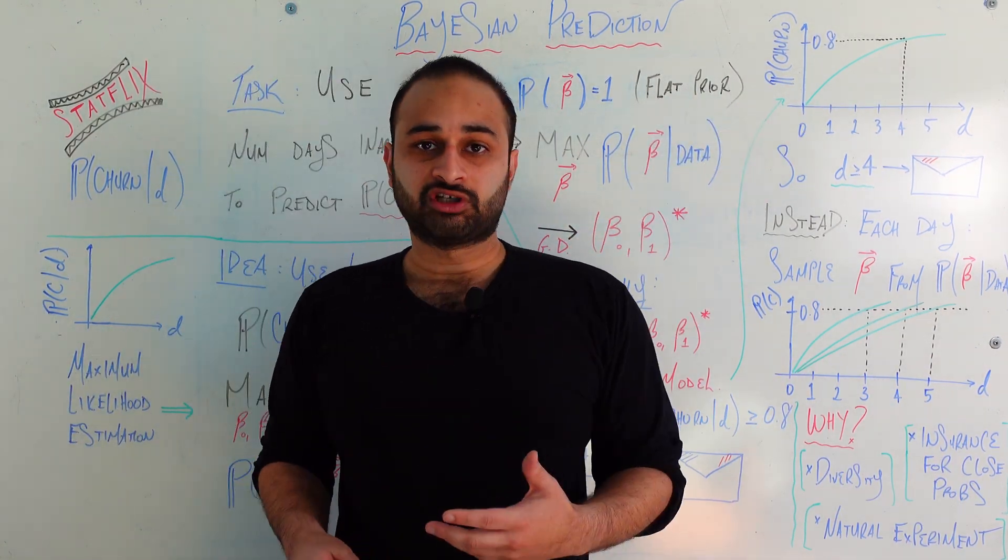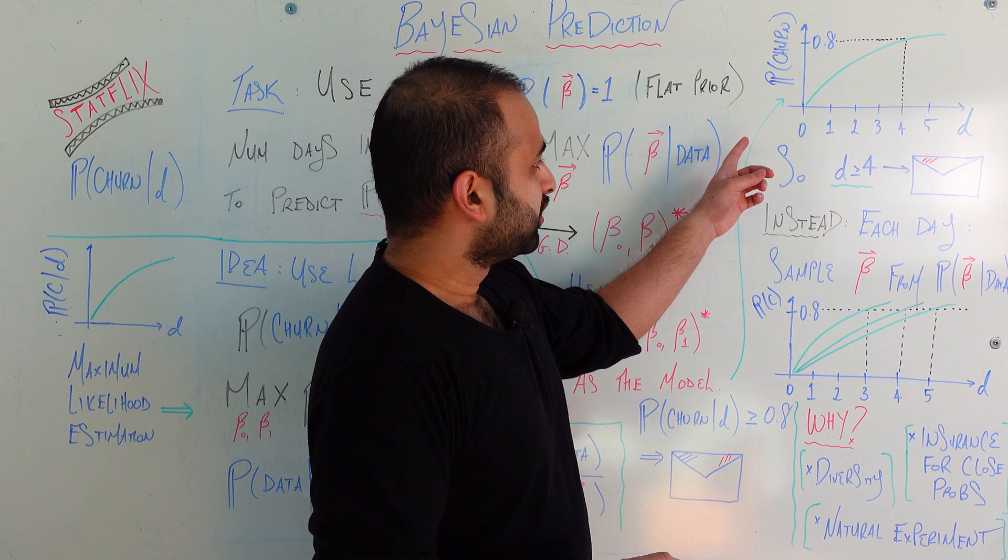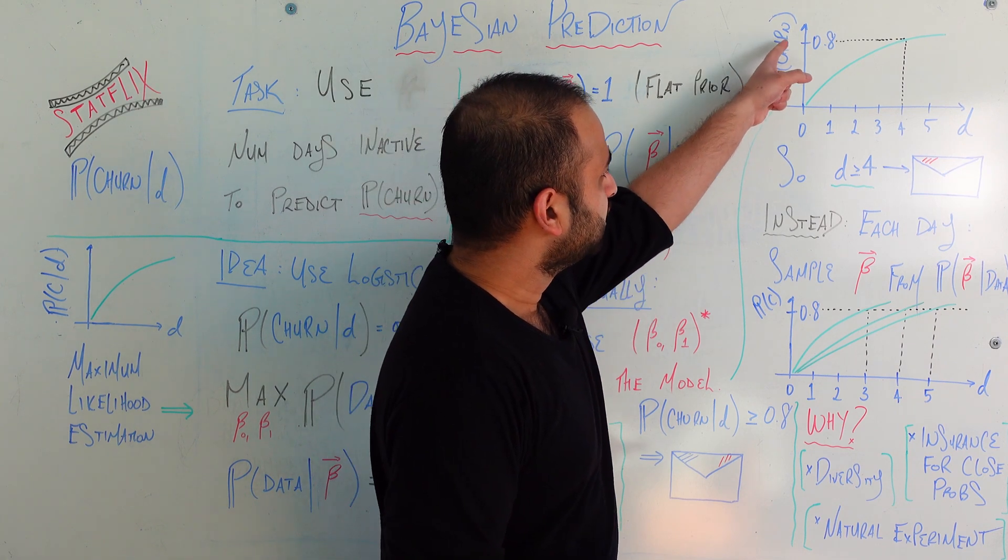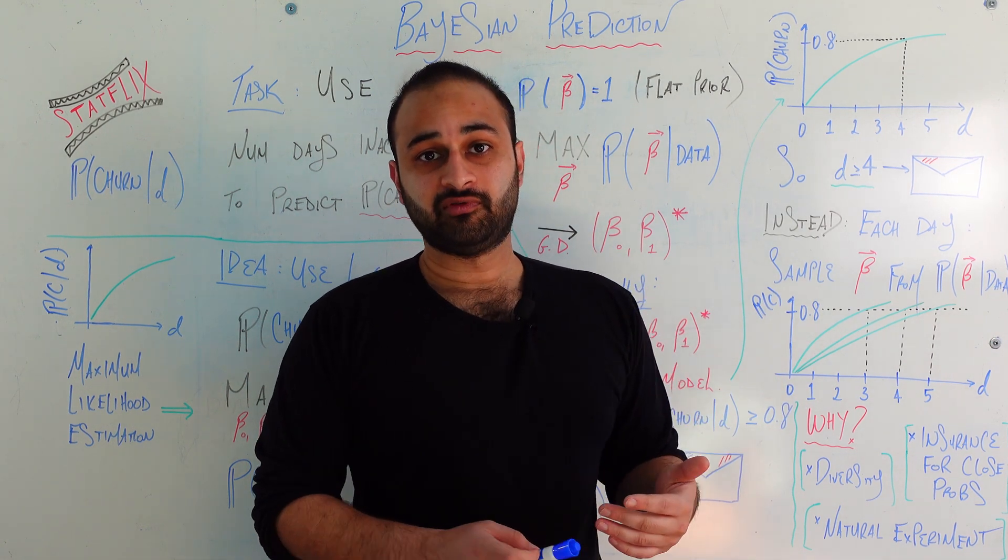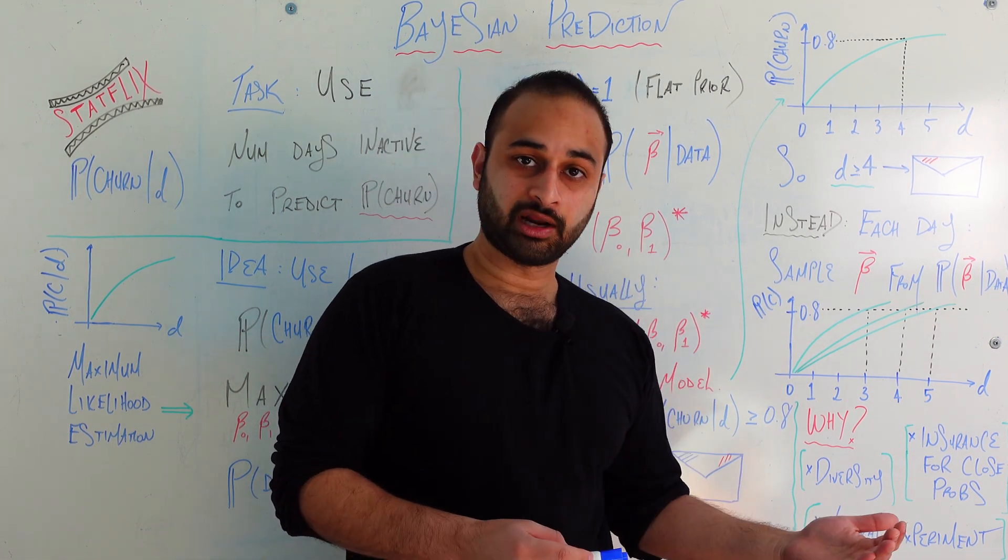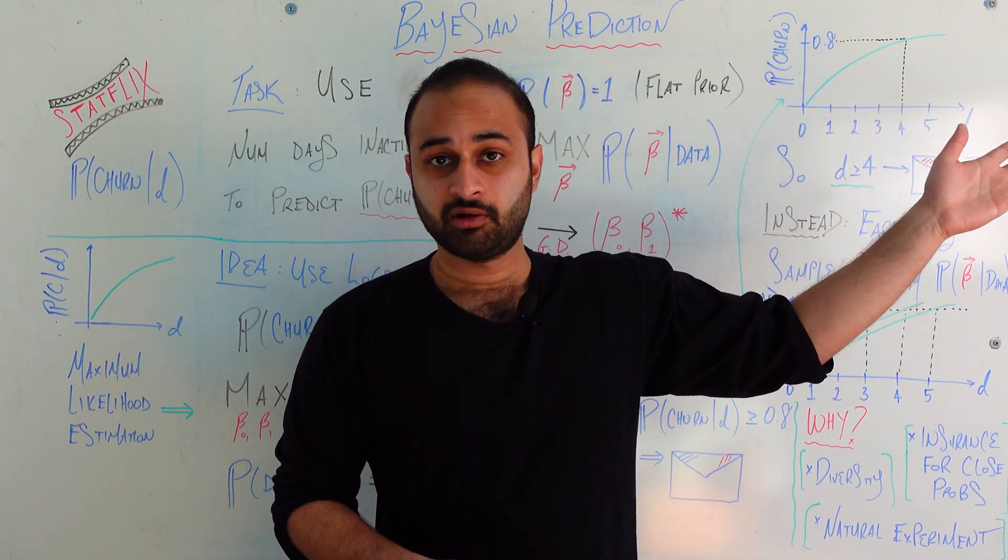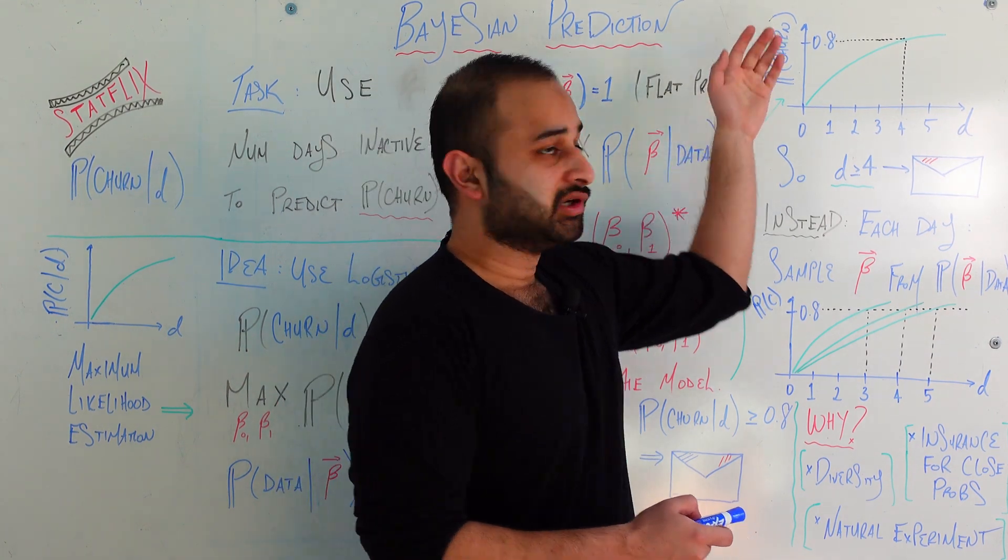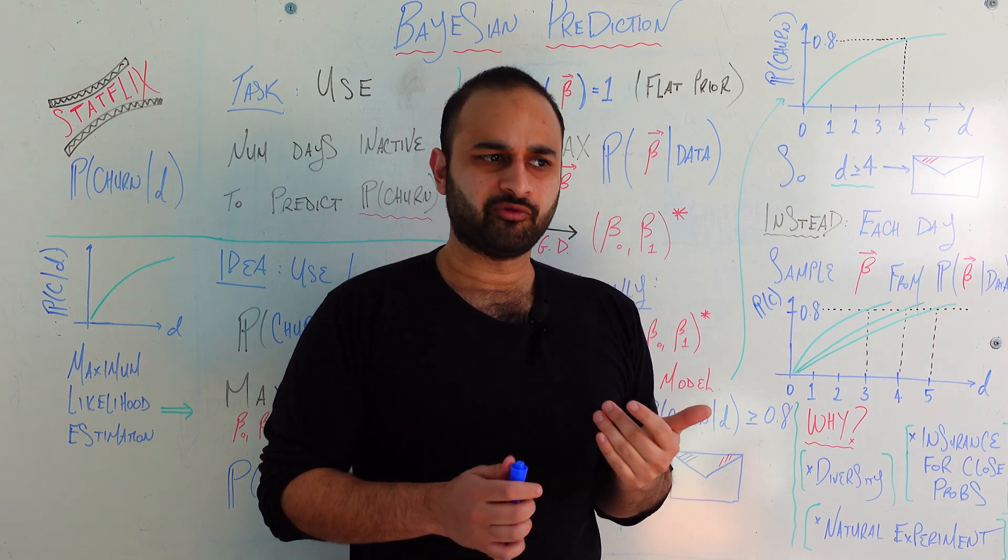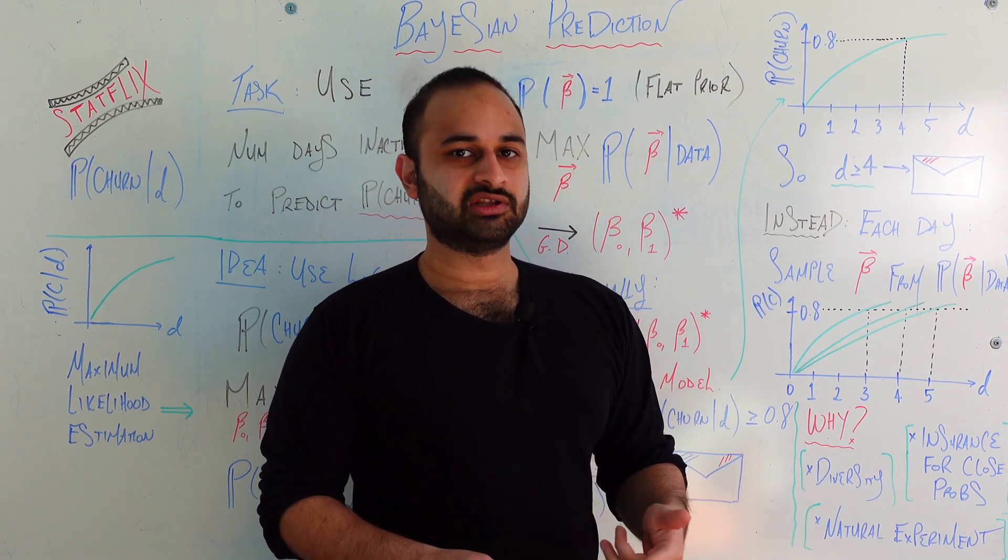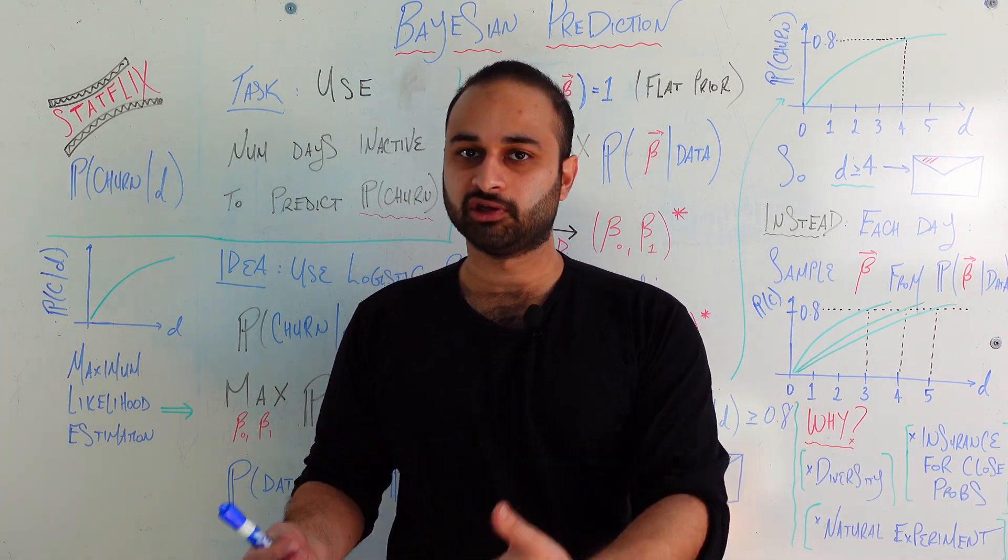And how would that work? Well, we would pick some kind of threshold for the probability of churning. Let's just say it's 80%. And so if my logistic regression predicts that the probability that somebody's going to churn is above 80%, I will take some kind of action. In this case, I will send them an email. Here's a free month of subscription, in hopes that they will stick around on the platform a lot longer.